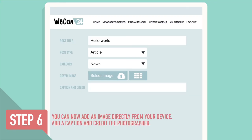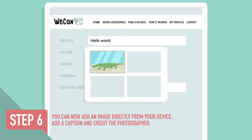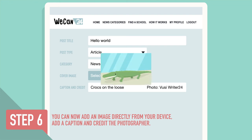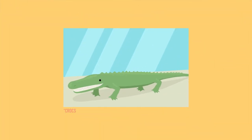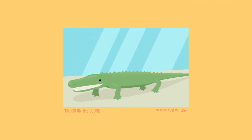Step 6: You can now add an image directly from your device. Add a caption and credit the photographer. Graphics and images provide information at a glance and act as a teaser to the story. Other multimedia elements such as videos and voice notes could provide more padding for your story.